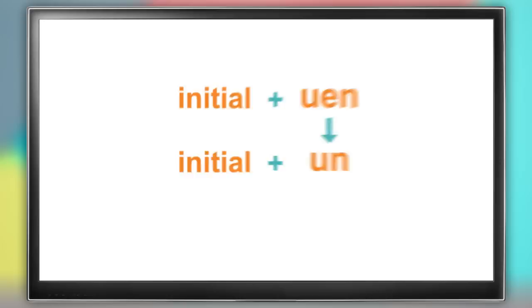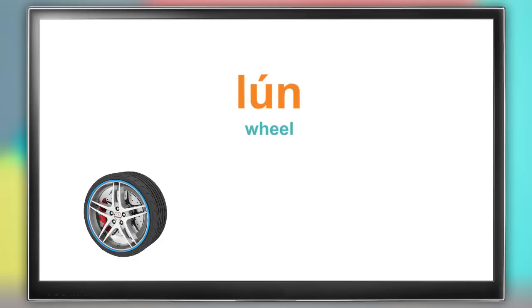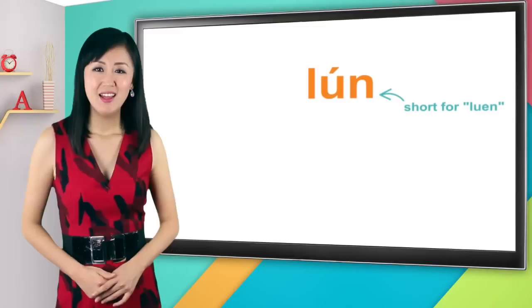When it's combined with other initials, then you keep the u but drop the e. For example, the word that means wheel in Chinese is lun, lun, second tone, lun. It's actually the u-e-n final, but the e has been dropped, lun.